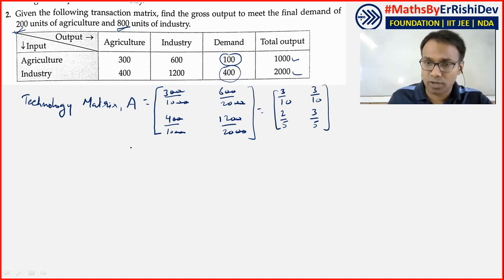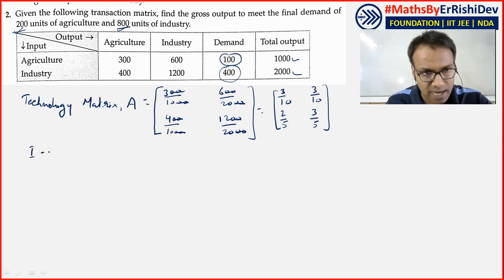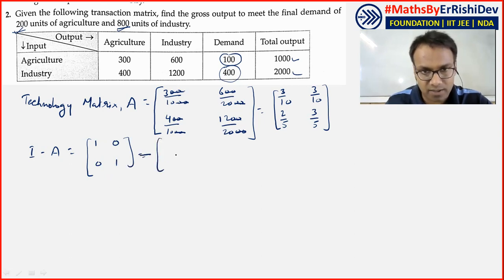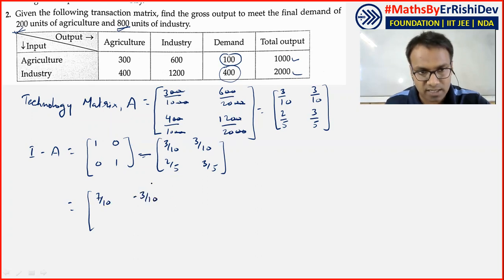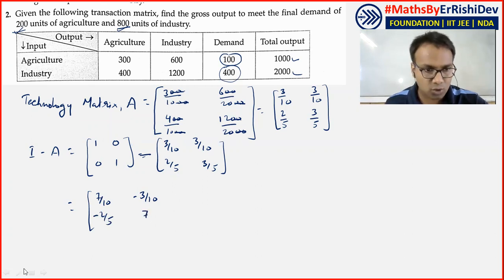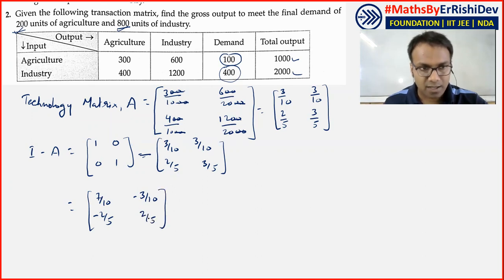The next step is to create the Leontief matrix, which is I minus A. After subtracting: 1 minus 3/10 gives 7/10; 0 minus 2/5 gives minus 2/5; 1 minus 3/5 gives 2/5. This is the Leontief matrix I minus A.